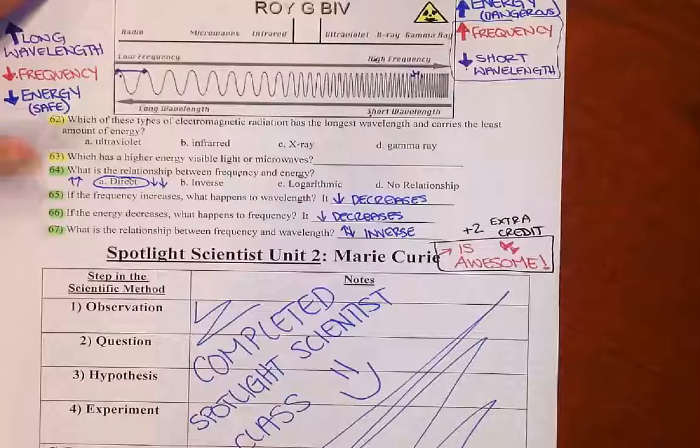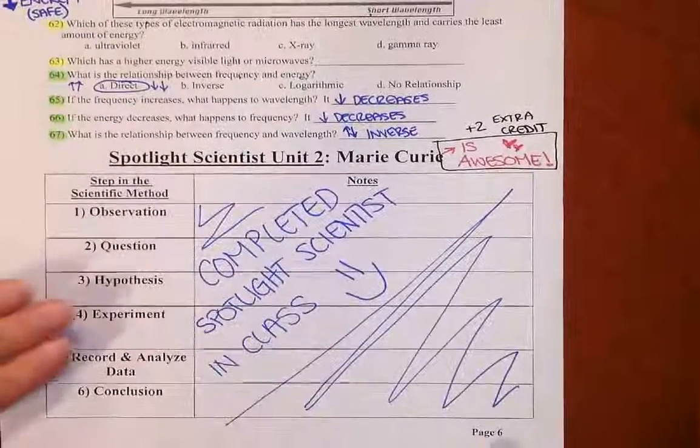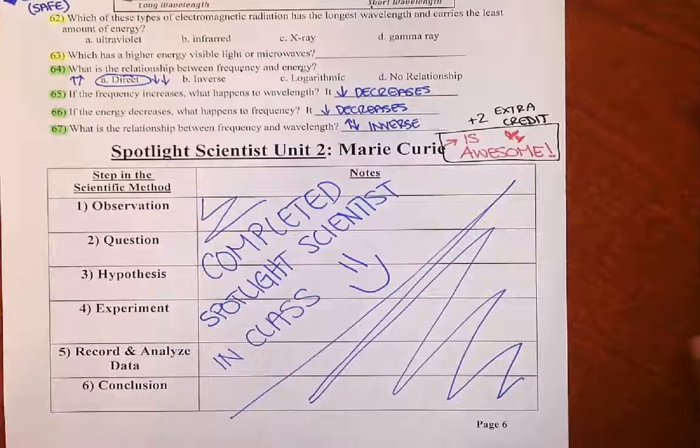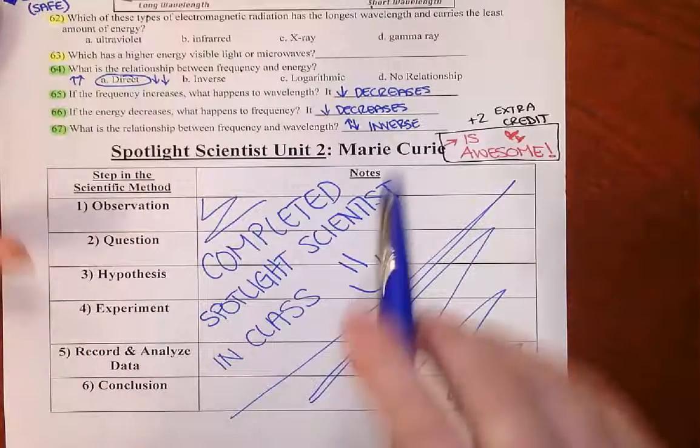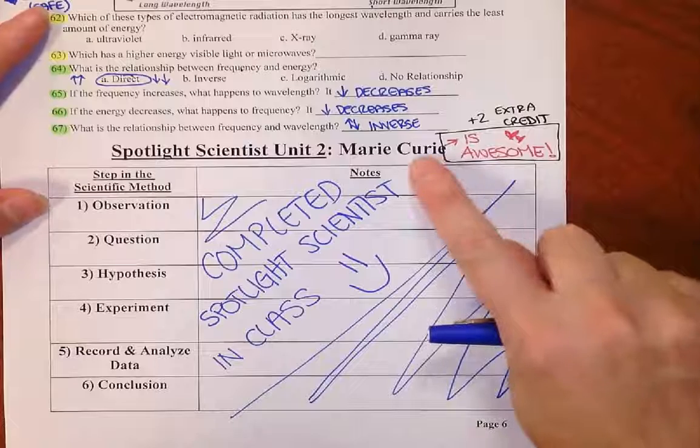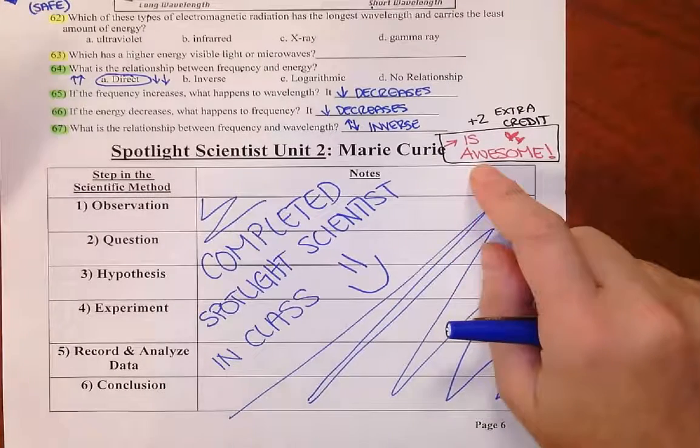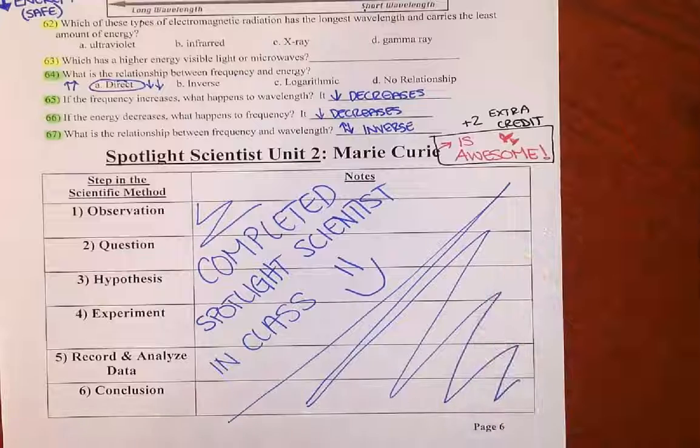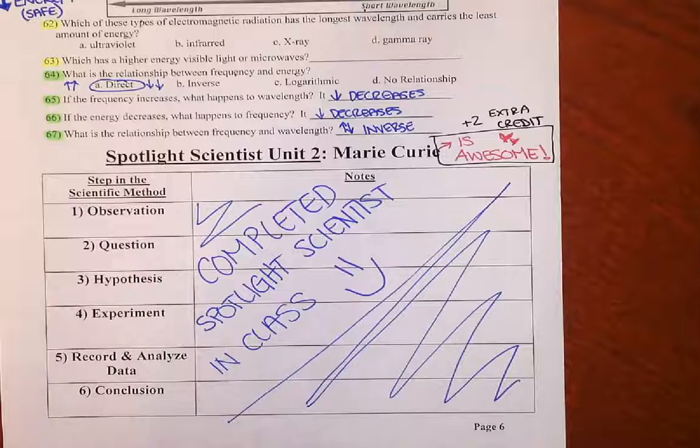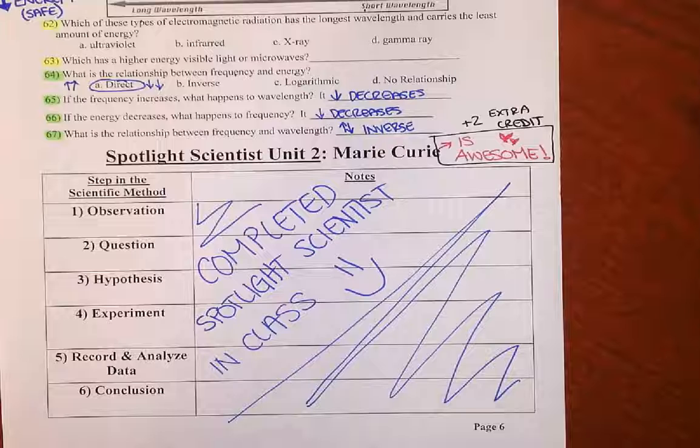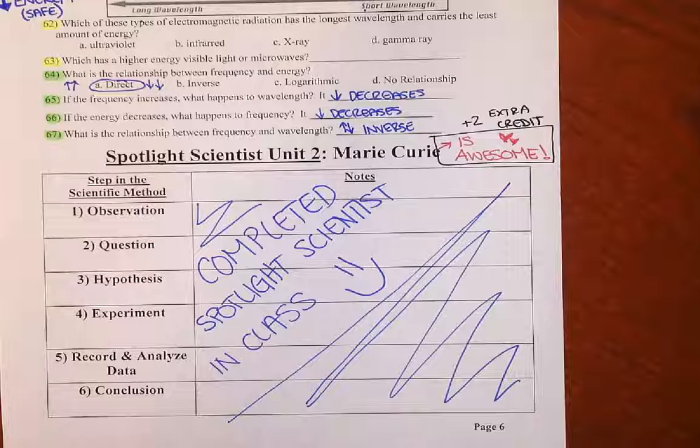Go back and watch the video tutorial for pages 10 and 11 if you need more help on this type of stuff. At the very bottom, we did this Spotlight Scientist in class in your notes. If you were absent, just write that you were absent here. You should have this all filled out from that. But for your last two points of extra credit, go ahead and write where it says Marie Curie, say is awesome. She was pretty hardcore. And if you were there, I hope you guys can appreciate how bad A on a video. She was pretty hardcore. Alright, thanks. Good luck on your test.